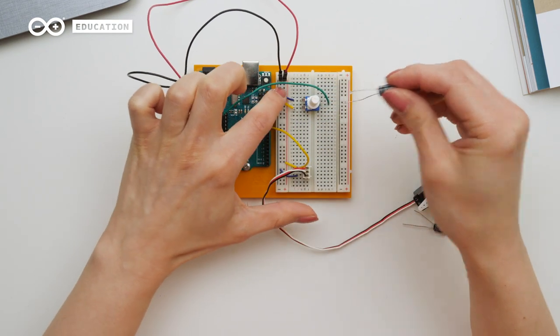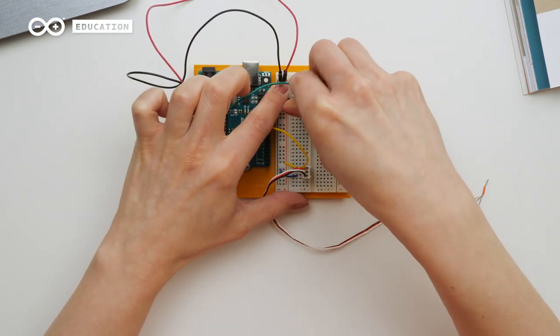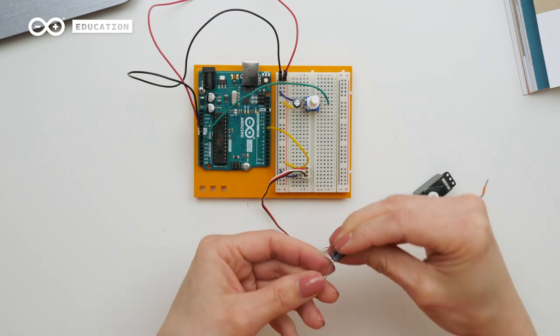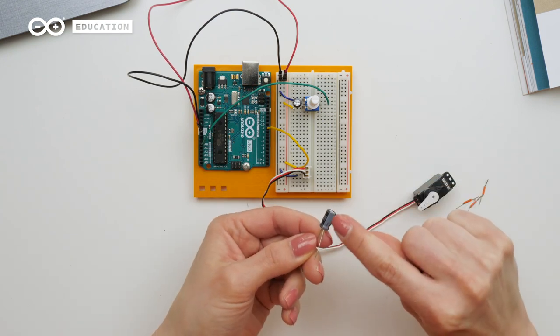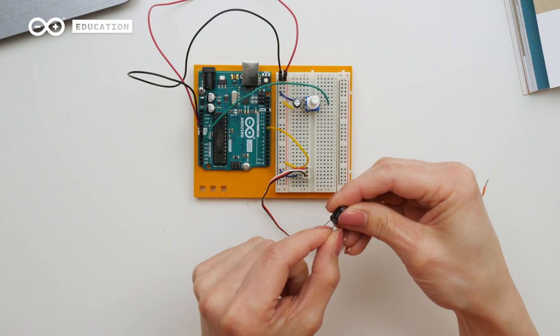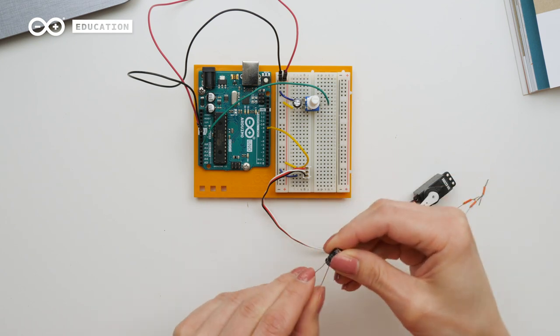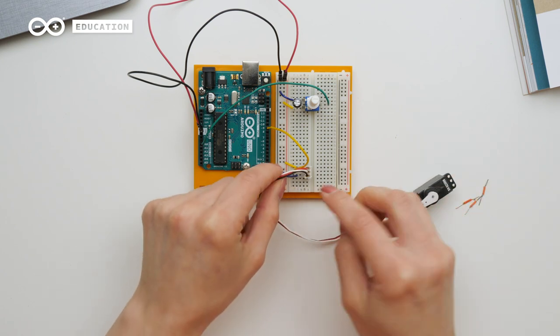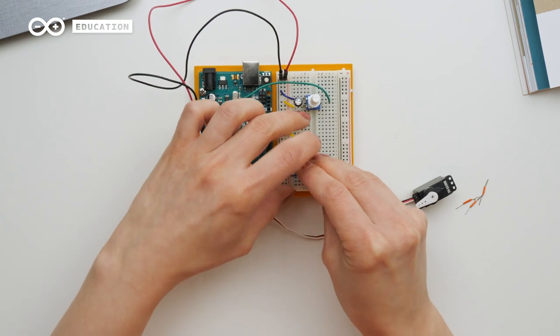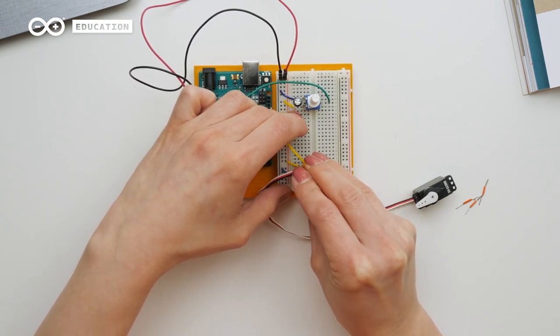I have the ground leg here, and then here once again I check, okay, here is the ground. It's a shorter leg, and I have the ground, the black wire, on this side.